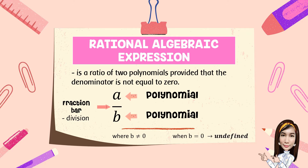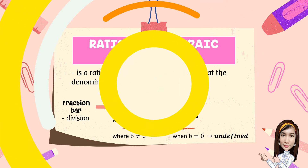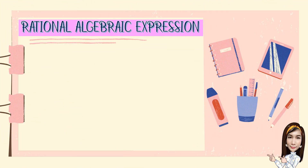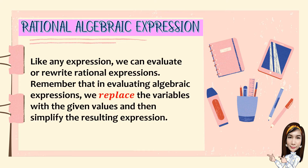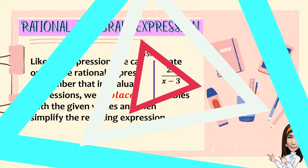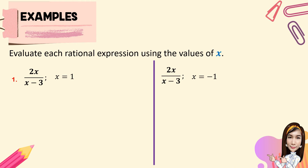But when B is equal to zero, the expression is considered undefined. Like any expression, we can evaluate or rewrite rational expressions. Remember that in evaluating algebraic expressions, we replace the variables with the given values and then simplify the resulting expression. For you to understand, let's have the following examples.